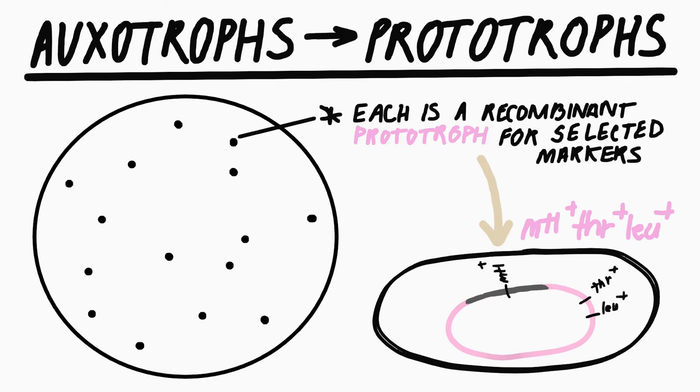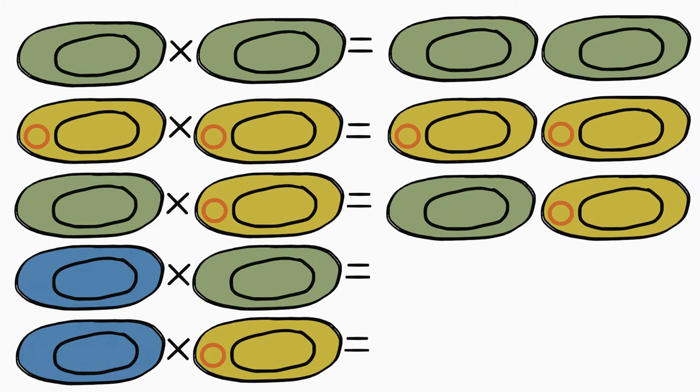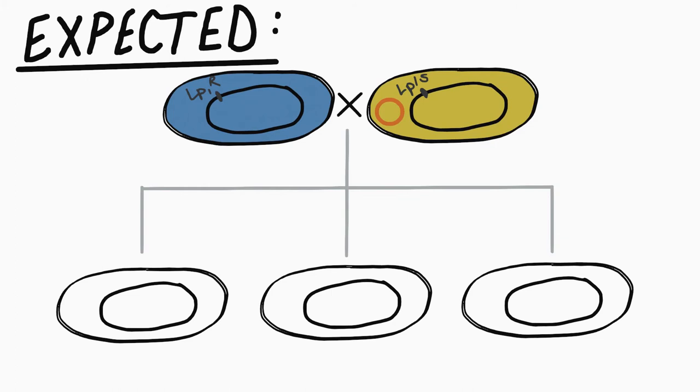As such, intercrosses between phenotypes revealed only the parental strains, illustrating the segregation of lysogenicity in the offspring. This did not support the Lederbergs' anticipation of the independent segregation of the phage cytoplasmically and any genetic locus determining lysogeny, designated LP1.